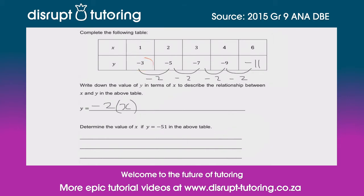But we know when x is 1 we need to be at minus 3. So what number do we add or subtract to get to minus 3? We're at minus 2, so we need to subtract 1. To check: minus 2 times 4 is minus 8, minus 1 gives us minus 9 — which is exactly what we're looking for. So the relationship is y = -2x - 1.